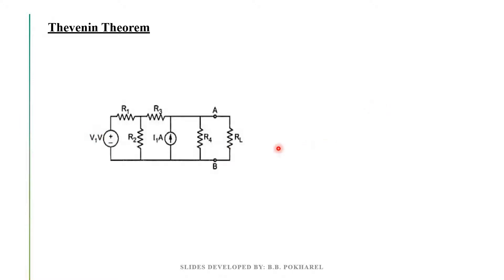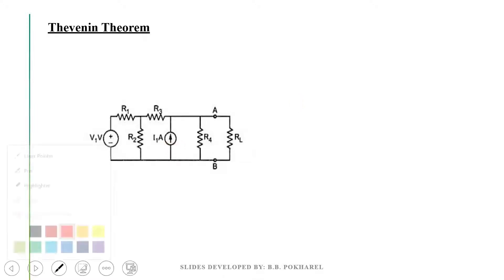I know that this circuit is very strong. I don't see any resistance in this circuit. I don't see any current in this circuit. The current, the voltage, the current, and the voltage — so we can use this circuit in the same way.